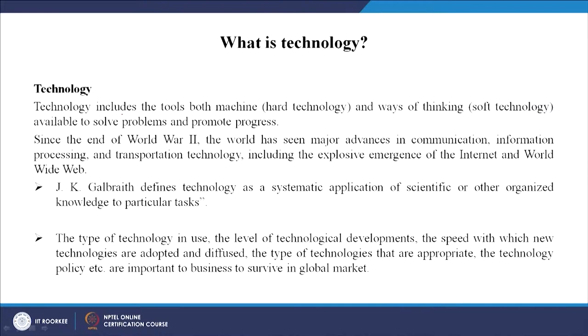What is technology? Technology basically includes tools which are both machines and ways of thinking. When it is a machine it is a hard technology; when it is thinking it is a soft technology, available to solve problems and promote progress. Technology has always been developed for the improvement of mankind, and using this technology firms have made money and achieved economic progress.